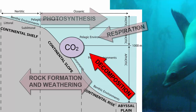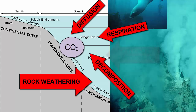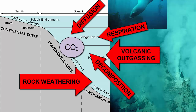Which of these processes produces carbon dioxide gas as a byproduct? Decomposition, respiration, rock weathering — which also includes fossil fuel burning on land — diffusion from the atmosphere, and volcanic outgassing. Volcanoes also erupt carbon dioxide, but not oxygen.